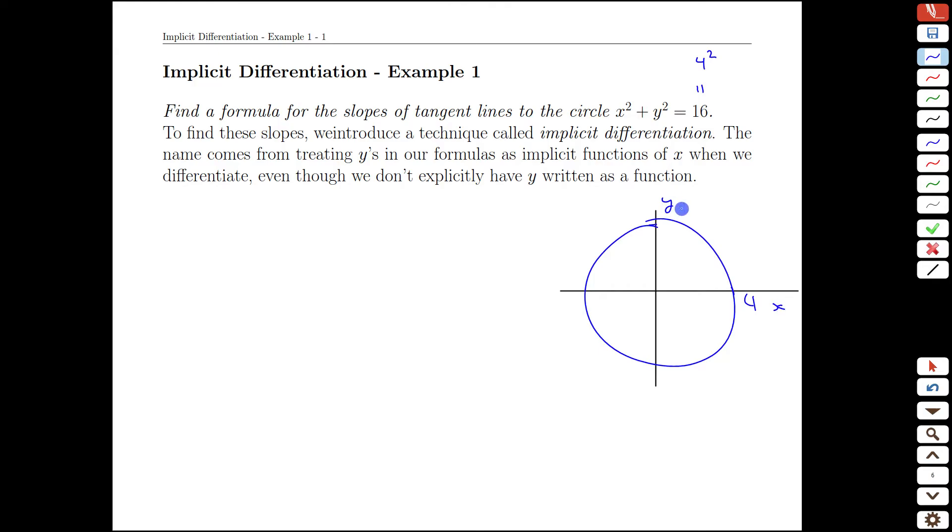Again, the 16 is the radius squared, 4 squared. So we have the circle defined and what we're going to do is start with that formula. The thing we know is that every point on this circle satisfies x squared plus y squared equals 16. No matter where we go, that's the case.